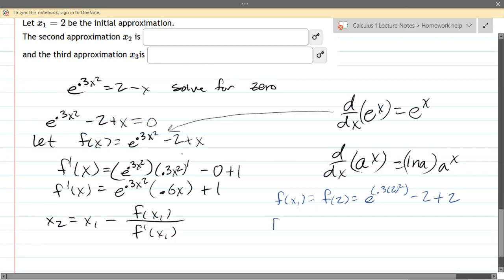And now f prime of x1 is f prime of 2. And now we're using this right here. And wherever I see x, x appears twice. I'm going to put in the value 2 right there. So this is e to the 0.3 times 2 squared. You can add extra parentheses times 0.6 times 2 plus 1.